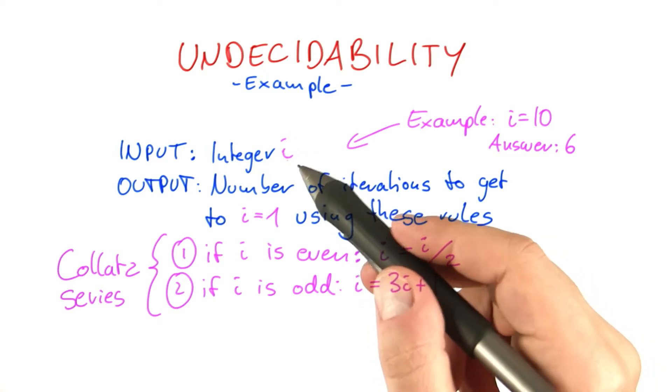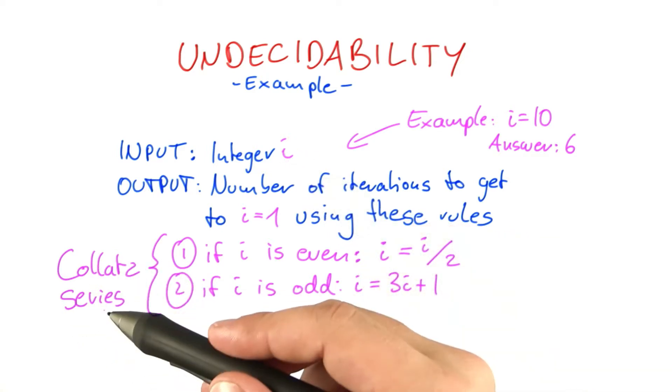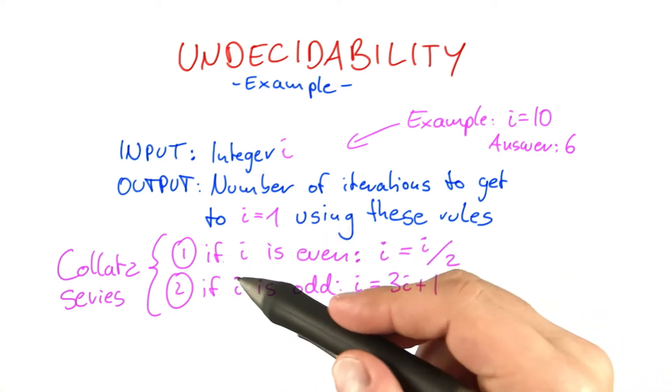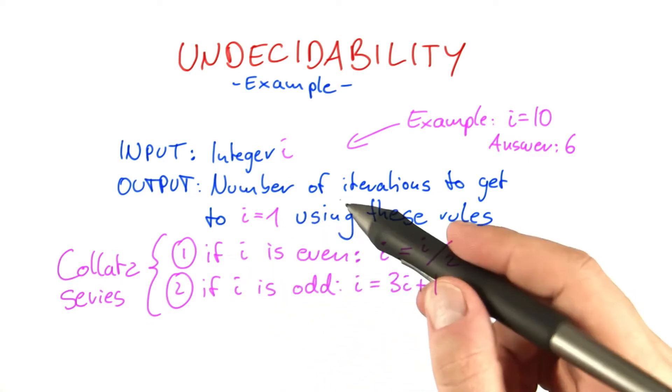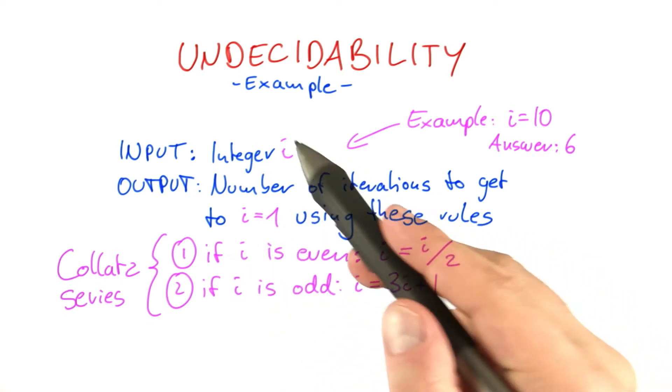So if we were given an integer for this function here, for which the Collatz hypothesis, that this algorithm here always terminates, has not been verified, then that would indeed be undecidable.